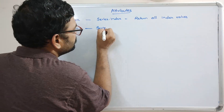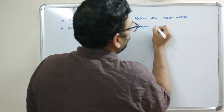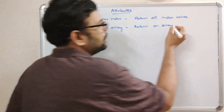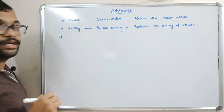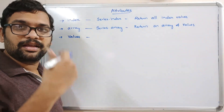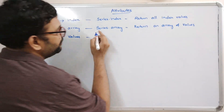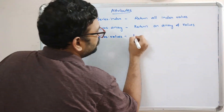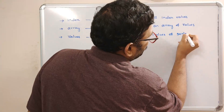The second attribute is array. The syntax is series.array, which will return an array of values — whatever elements we are giving in the series will be returned as an array of values. The third attribute is values. The syntax is series.values, and it returns the values of the series.